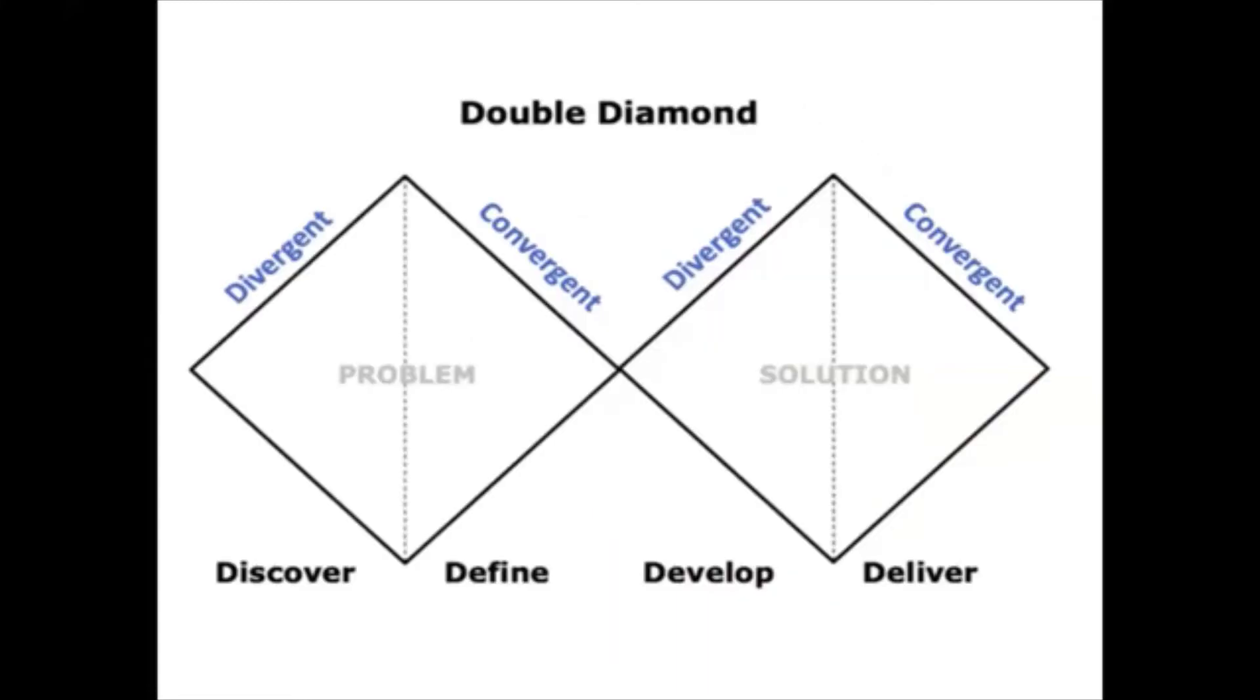We go through this process through what many of us call the double diamond. In terms of the problem, we need to be divergent. We need to be thinking really broadly about the problem. If you think you know the problem, unless you've talked to hundreds of customers that have that problem, you're probably wrong. We need to be divergent and empathetic around that problem. Then we converge around, okay, now I think I understand the problem. Now I'm going to go through the same process around the solution. It's almost like you've got to park your solution until you really understand, until you've converged on what the problem is.